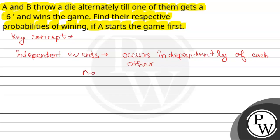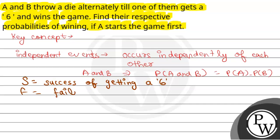If A and B are independent events, then probability of A and B equals probability of A multiplied by probability of B. Suppose S denotes success of getting a 6, and F denotes failure of not getting a 6. So probability of S is 1/6 and probability of F is 5/6.